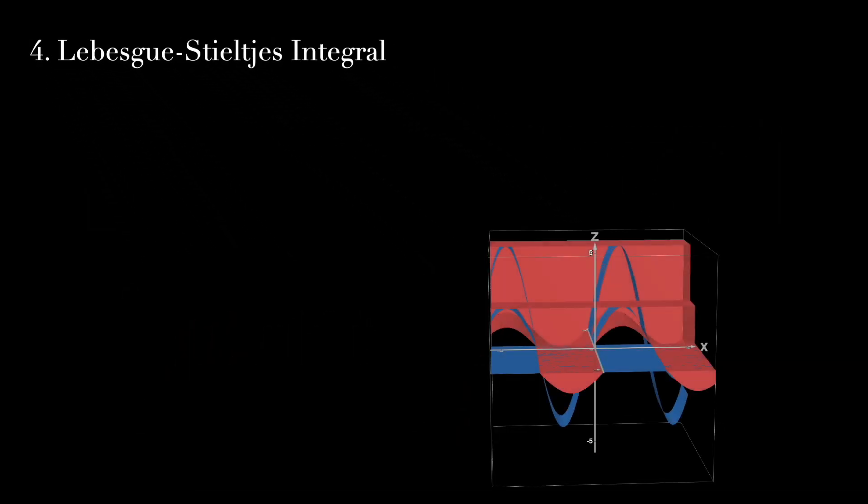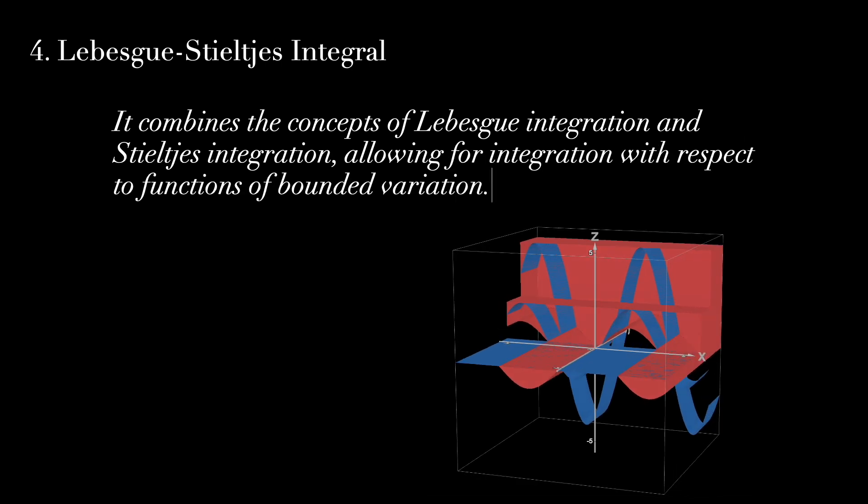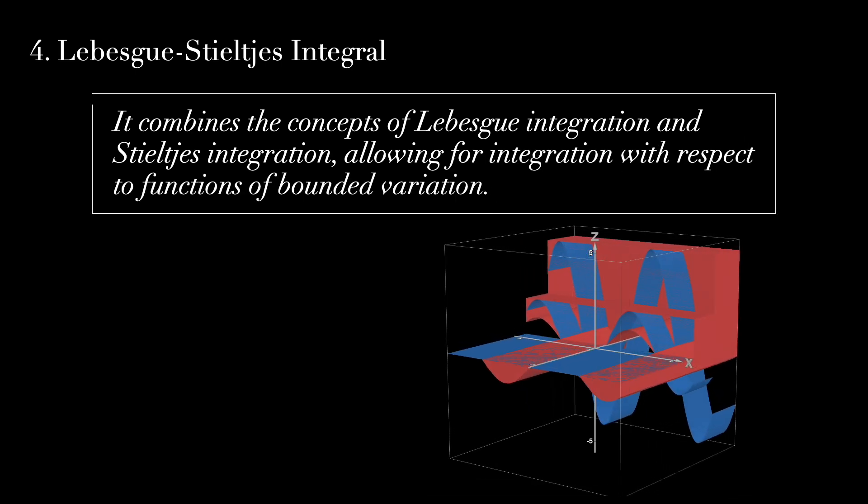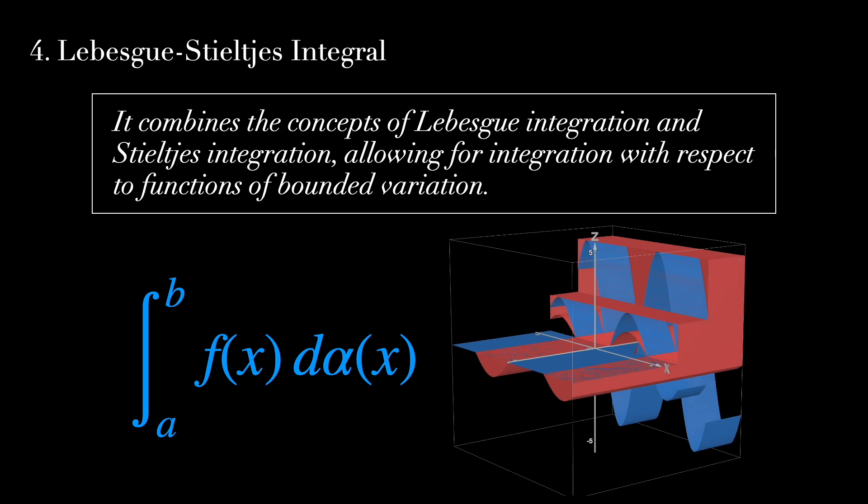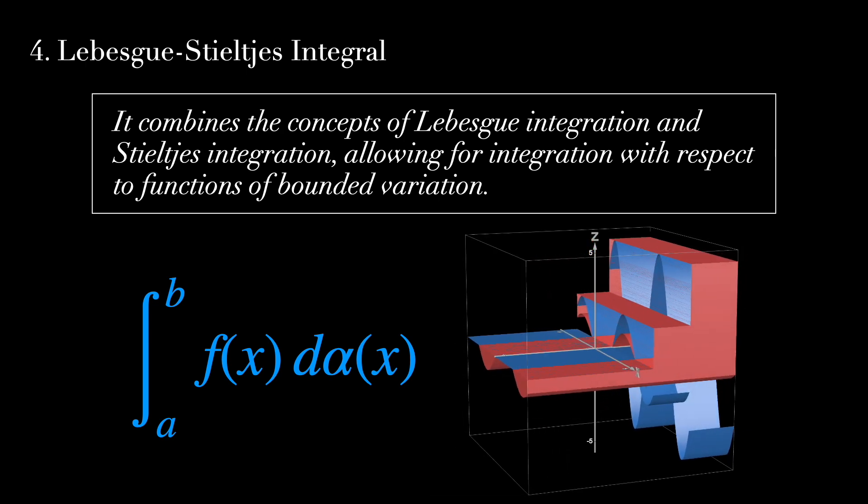Fourth, we have Lebesgue-Stieltjes integral. It combines the concepts of Lebesgue integration and Stieltjes integration, allowing for integration with respect to functions of bounded variation.